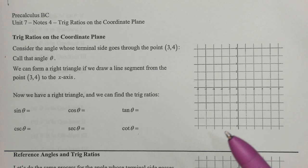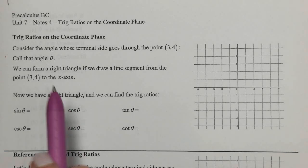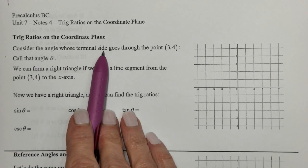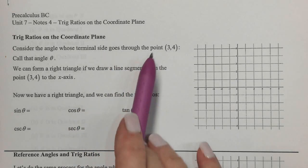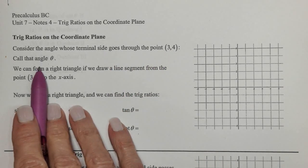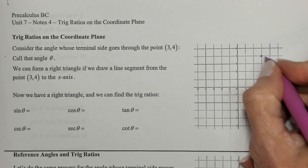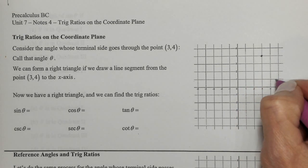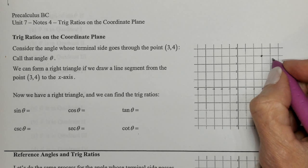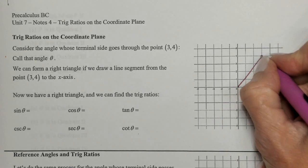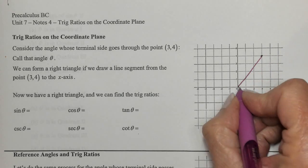Today we're going to be taking a look at trig ratios on the coordinate plane. Let's consider an angle whose terminal side goes through a point — we're going to call that angle theta. There's the point, and the terminal side of this angle goes through that point, so here's the angle right here.